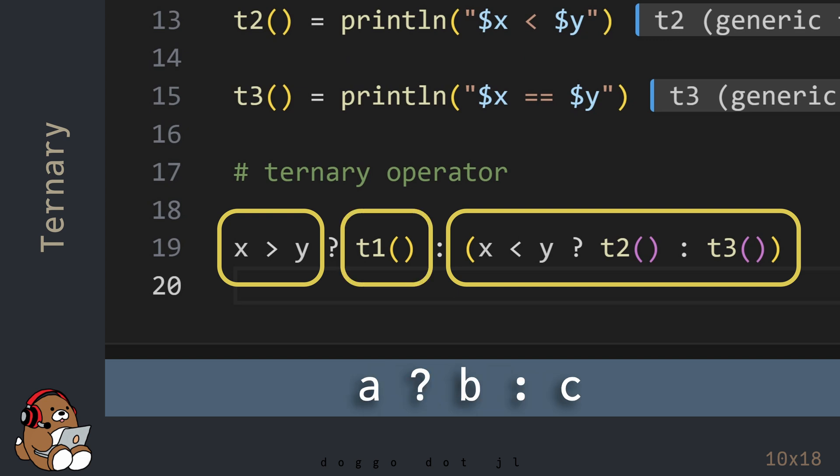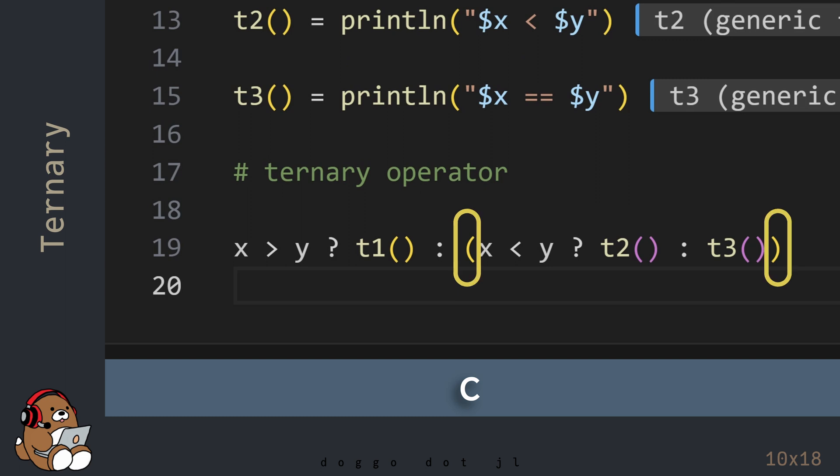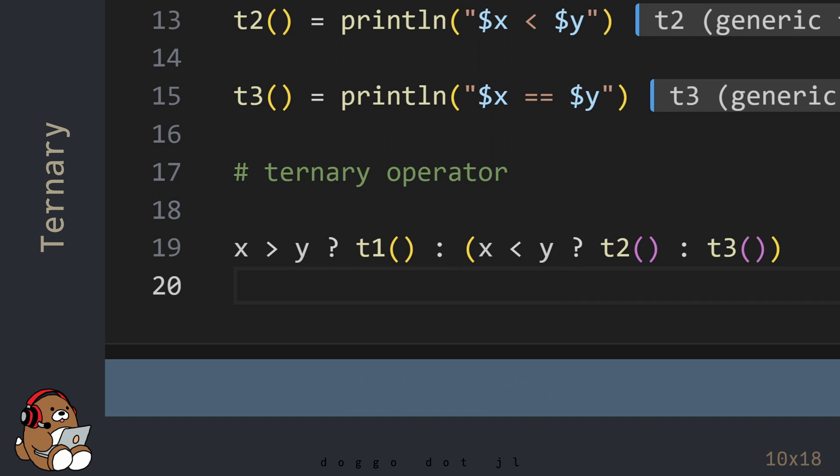The ternary operator is meant to have only three operands, but you can include another ternary operator nested within a ternary operator by using a pair of parentheses. So that last expression is a nested ternary operator, which allows you to include another conditional expression. Even though this syntax is very different, behavior-wise, it's the same as using if else if else end.